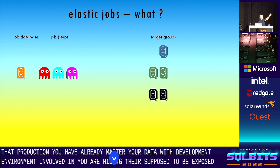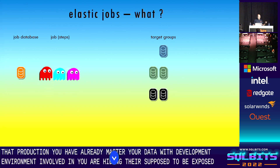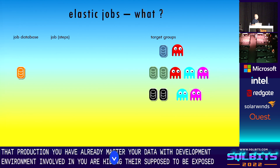You can imagine an architecture where we have the job database, where the agent is working, and we have target groups containing different objects. With three target groups, when we push jobs to different target groups, we can do so at the step level. One job may have multiple steps and each step can go to a different target group — so one job, three steps, three different target groups.